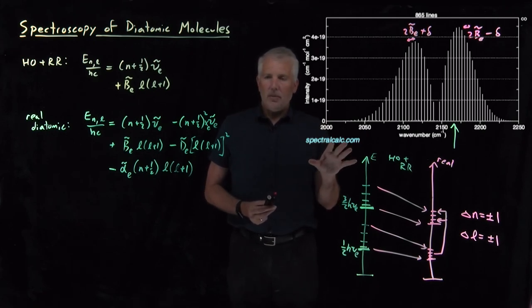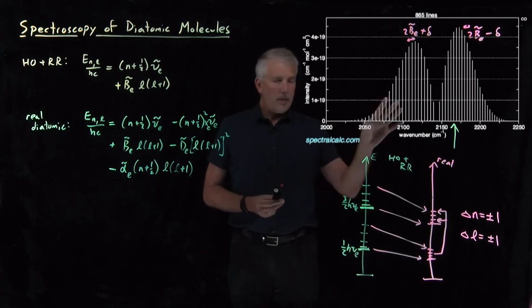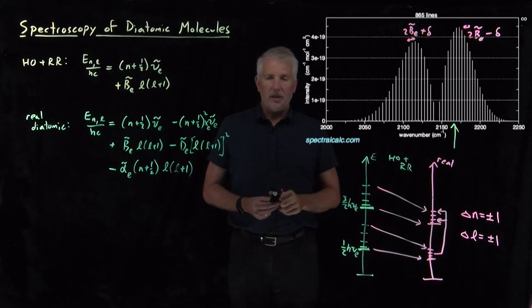So the next thing we've talked about now that we fully understand diatomic molecules out to many, many sig figs, and we can predict lots of features of their spectroscopy. The next question is to ask what we can understand about polyatomics. Can we get larger than diatomic molecules and understand something about their spectroscopy?